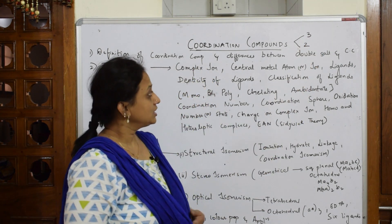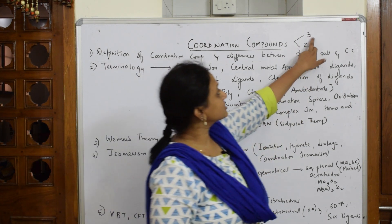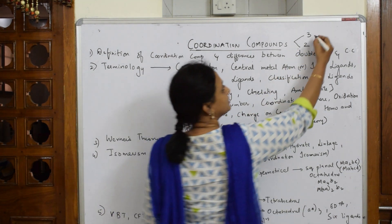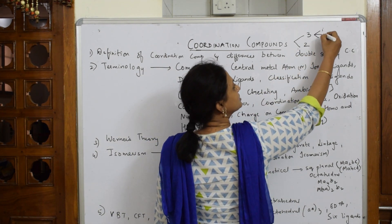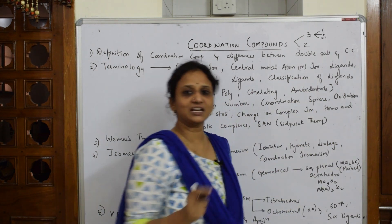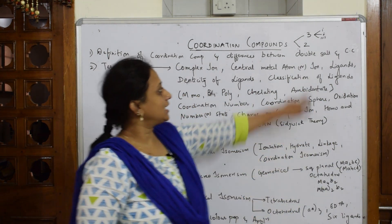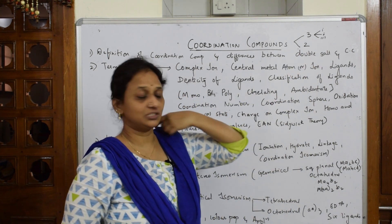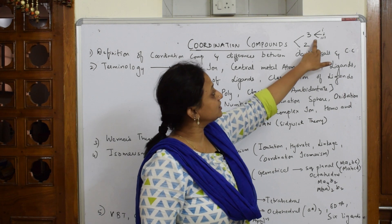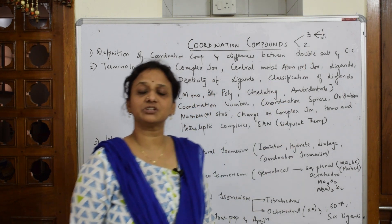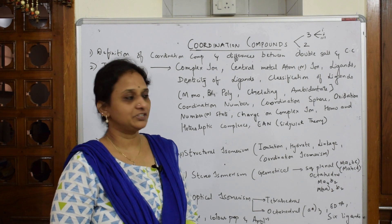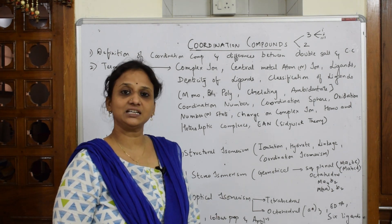In your three-mark questions, it will be subdivided into parts — one, two, and three. In two-mark questions, they may ask you nomenclature. So in the three-mark section, they may ask you what type of isomerism is present, which I'll be covering in detail.